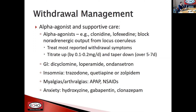Other supportive care agents include dicyclomine for cramps, loperamide for diarrhea, ondansetron for nausea. For sleep, options include trazodone, quetiapine, and zolpidem. For muscle and joint aches, Tylenol and ibuprofen. Clonidine and alpha agonists can help with anxiety, but if not sufficient, other agents include hydroxyzine, gabapentin, and in the right patient scenario, benzodiazepines like clonazepam.